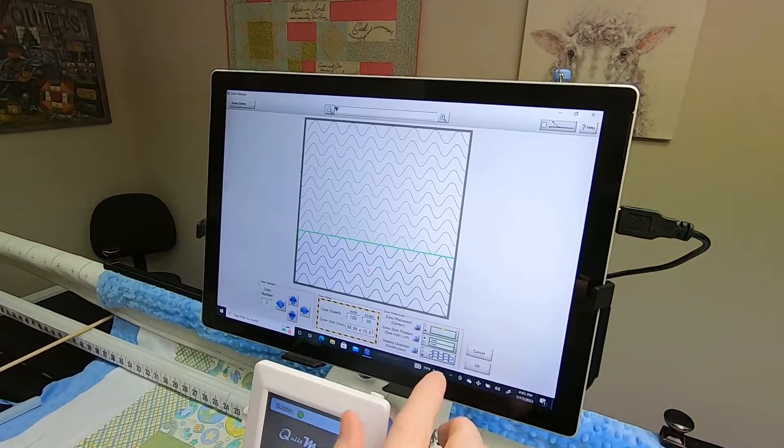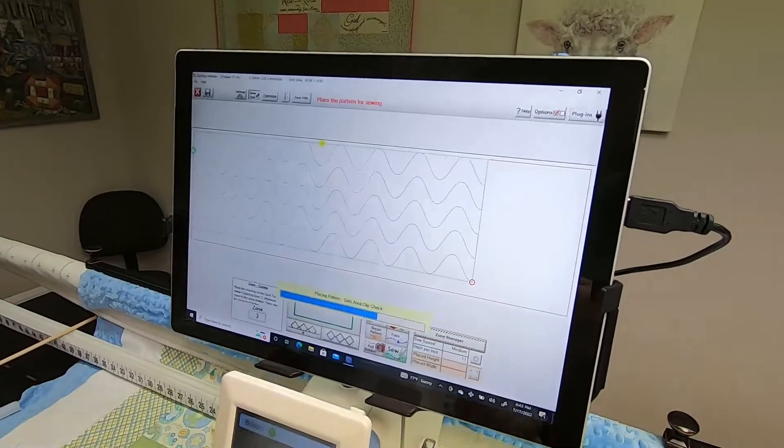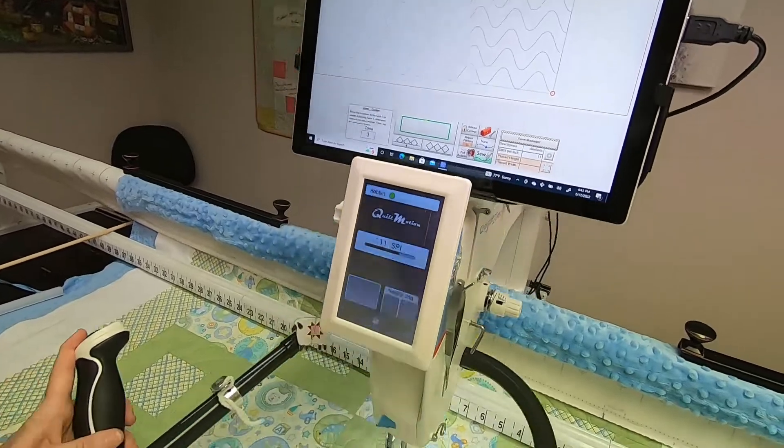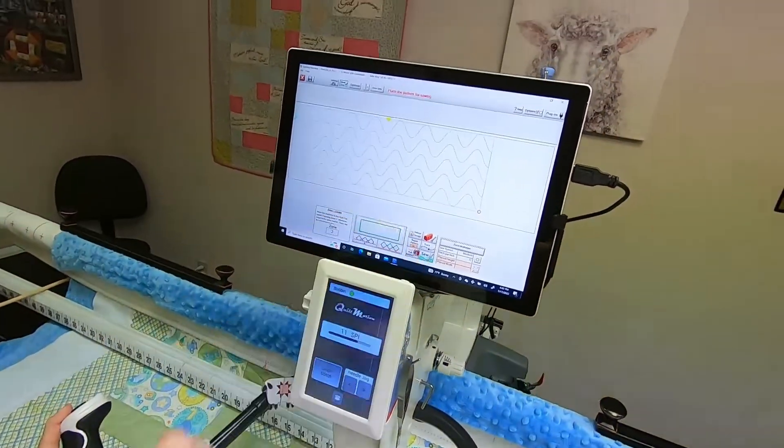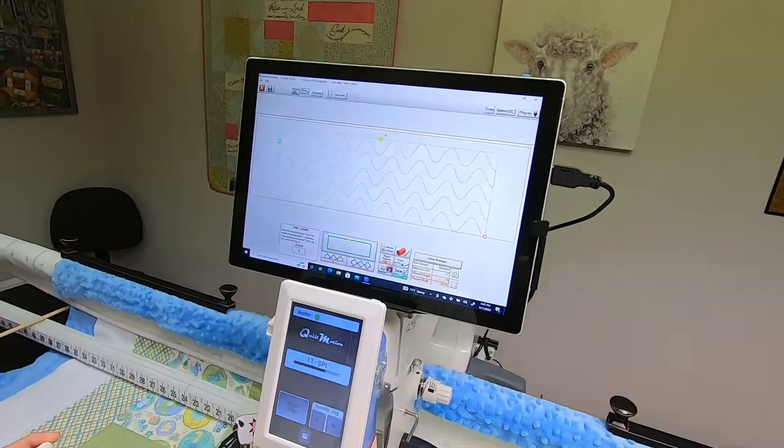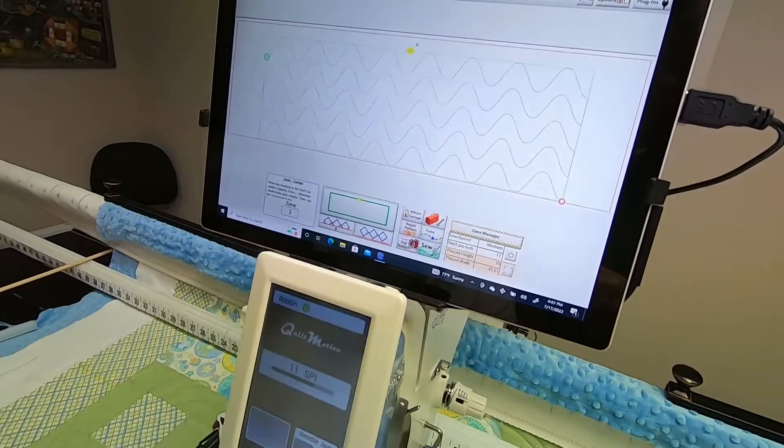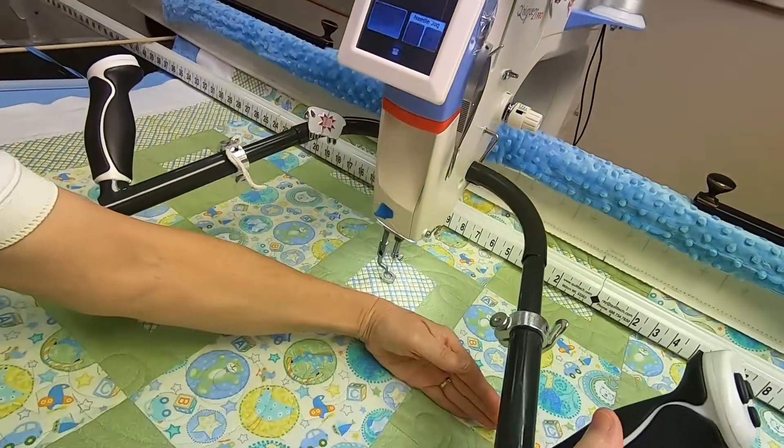That's in zone manager, and there's the center toggle between four point and center. Your zone has to be placed for you to be able to use this feature, and then those blue diamonds light up in blue.